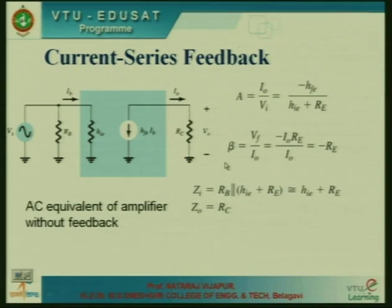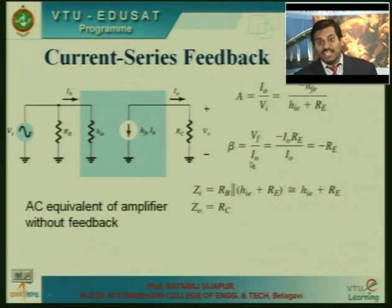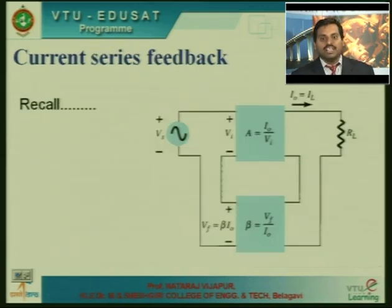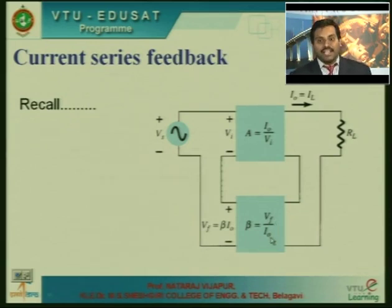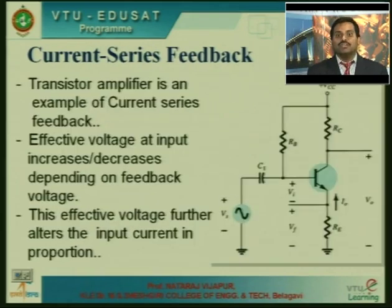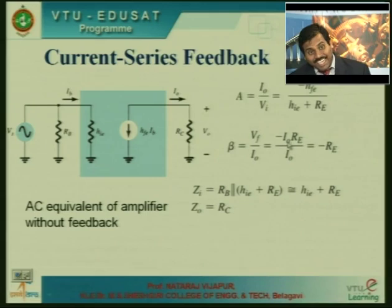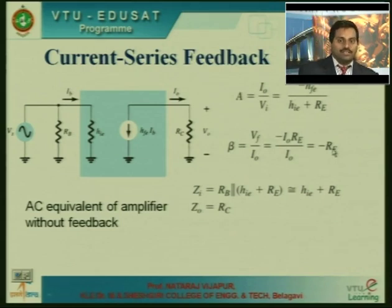The feedback network beta is Vf / Iout. The feedback voltage is generated across Re: Vf = Ie × Re. Since Ie = −Iout (emitter current is negative of the defined output current direction), we get beta = −Iout × Re / Iout = −Re. So the feedback network gain beta = −Re.